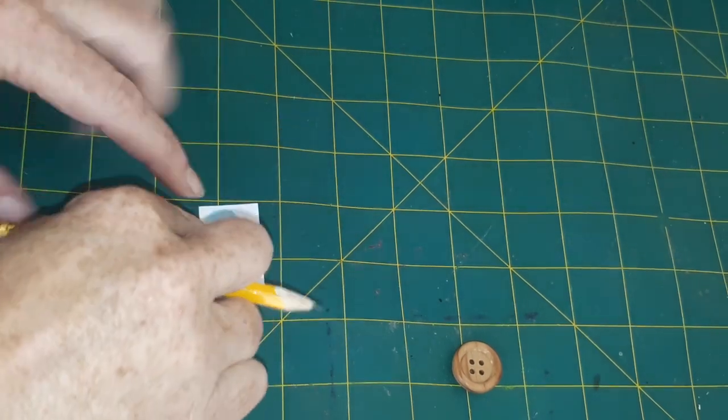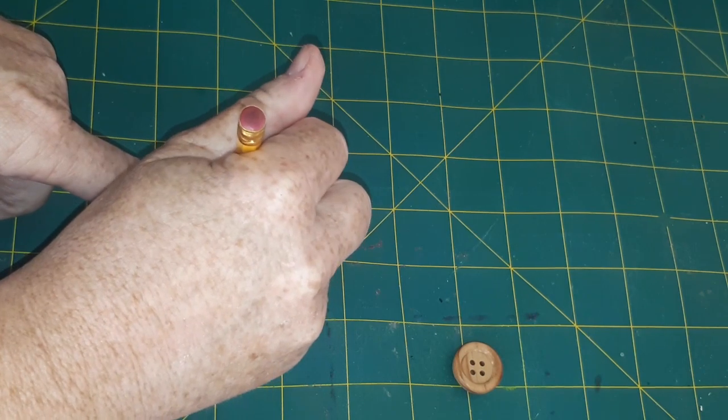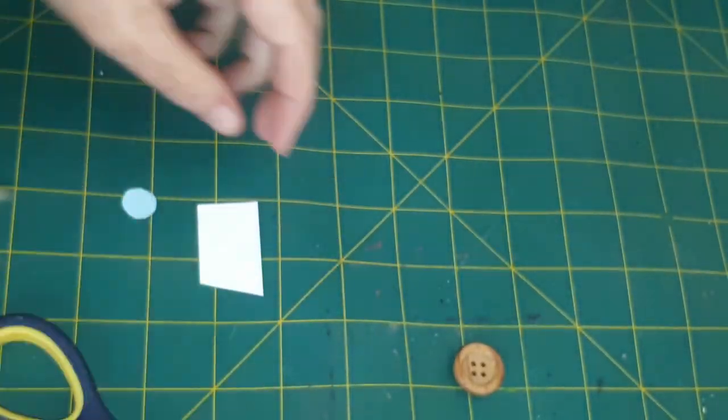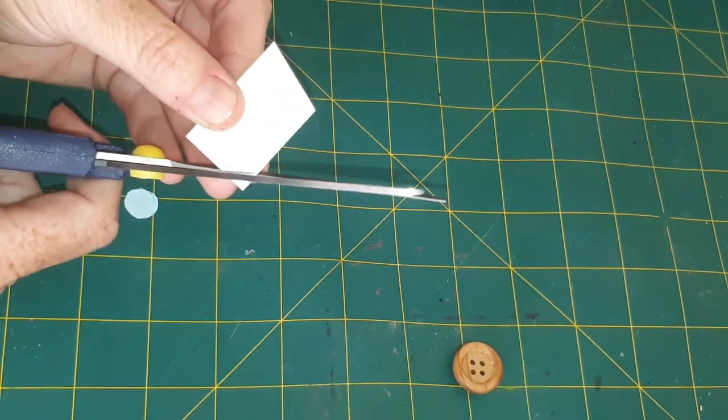Once I made the template fit nicely, I traced it onto thicker paper stock. It appears I'm not very good at cutting out circles nicely because it took me a couple of goes before I was happy with it.